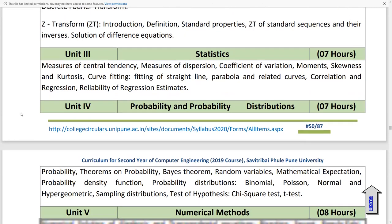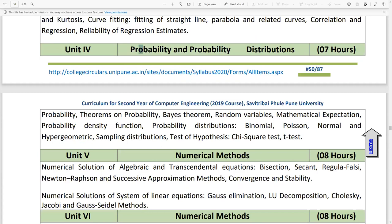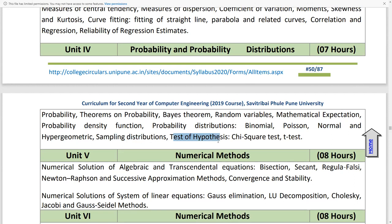Unit 4 is Probability and Probability Distributions. First probability, theorems on probability, Bayes theorem, random variables, mathematical expectation, probability density function, probability distributions including binomial, Poisson, normal and hypergeometric, sampling distributions, test of hypothesis, chi-square test and t-test. This is the content of Unit 4.